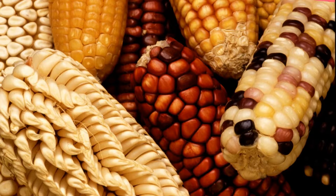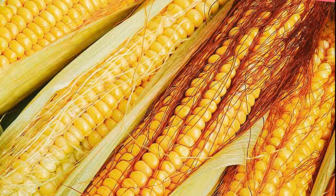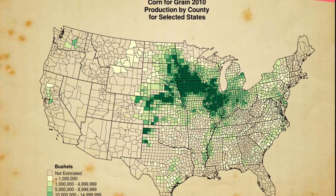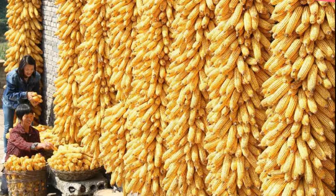Maize is known as makka in India, corn in USA and Indian corn in Europe. It is indigenous to the American continent. It was introduced by Columbus and other explorers in Europe. It is second to wheat in terms of area cultivated. It is used as food grain and fodder. USA is the largest producer and seller of maize in the international market. China is the second largest producer, followed by Brazil.